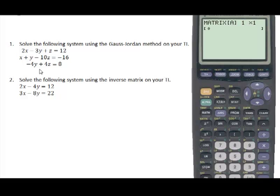And the matrix is going to have three rows and four columns. A column for x, a column for y, a column for z, and a column for my constants. So three by four.